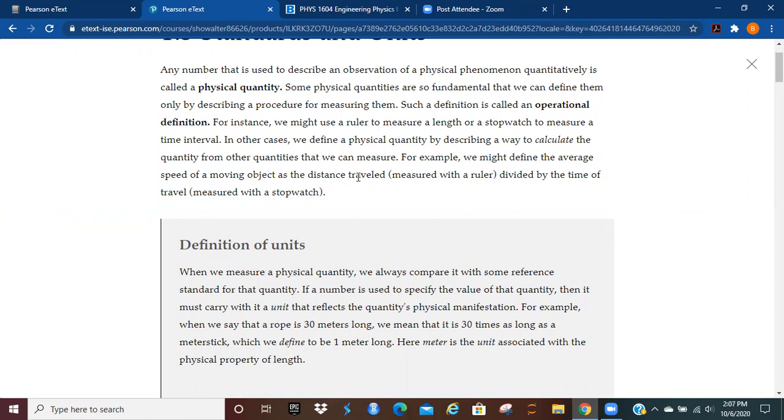For instance, we might use a ruler to measure a length, or a stopwatch to measure a time interval. In other cases, we define a physical quantity by describing a way to calculate the quantity from other quantities. In other words, we might define the average speed of a moving object as the distance traveled, which you would measure with a ruler, divided by the time of the travel, which you would measure with a stopwatch.